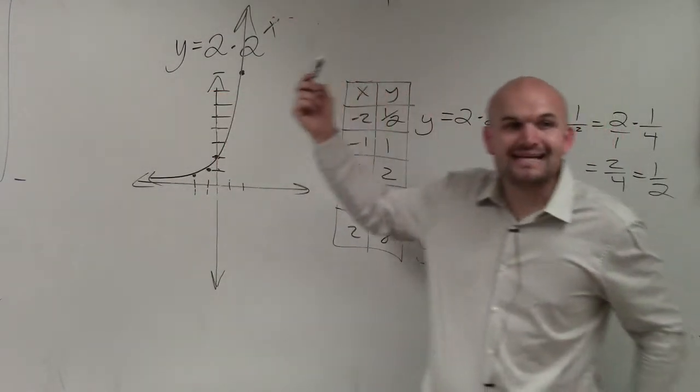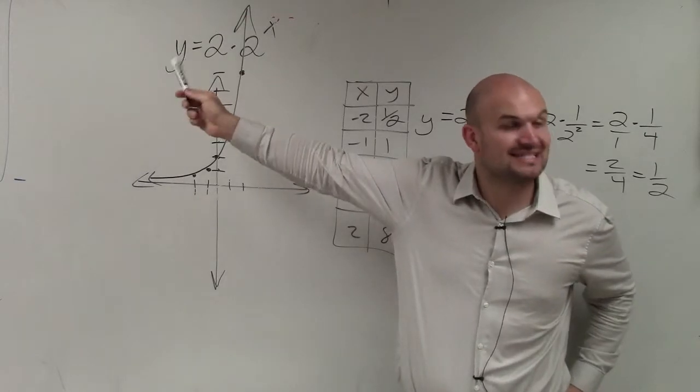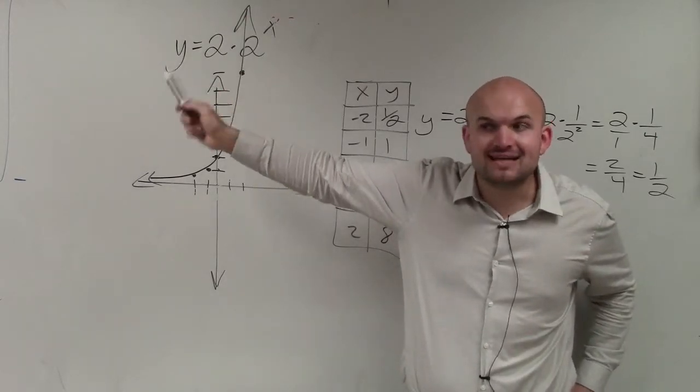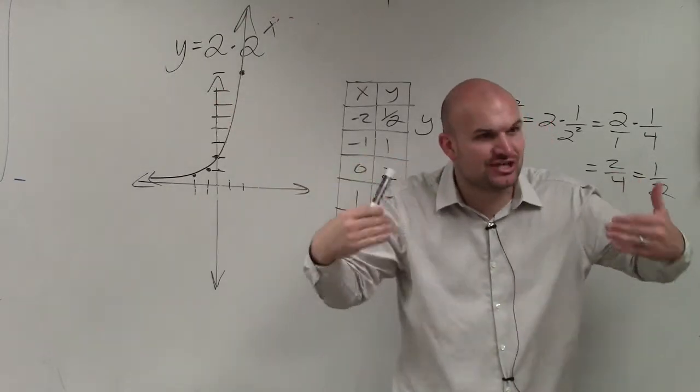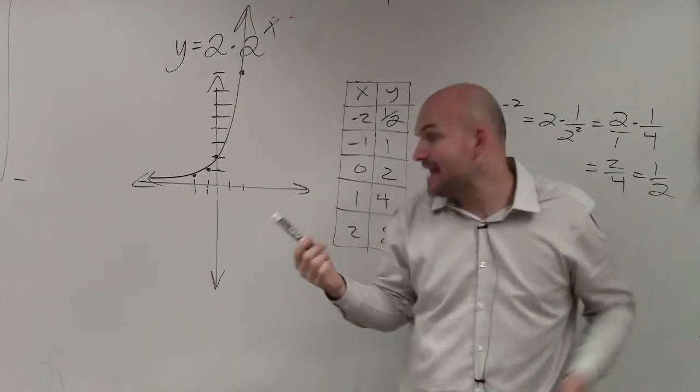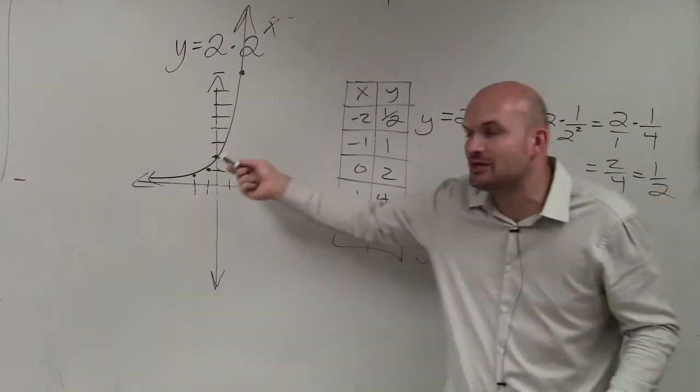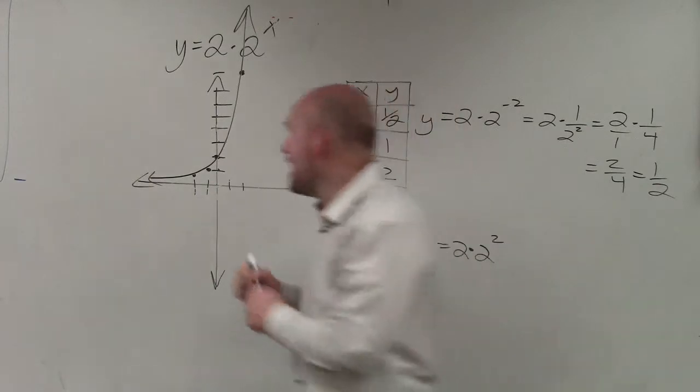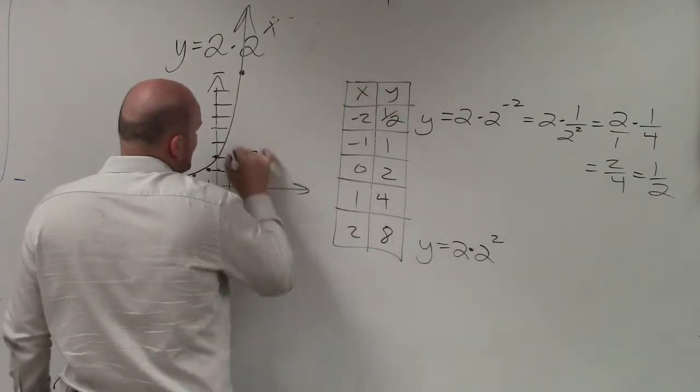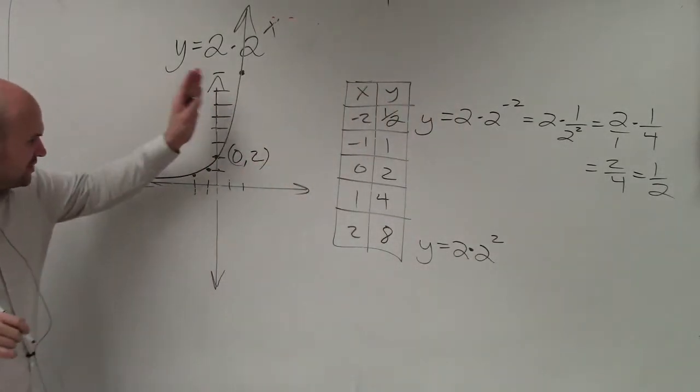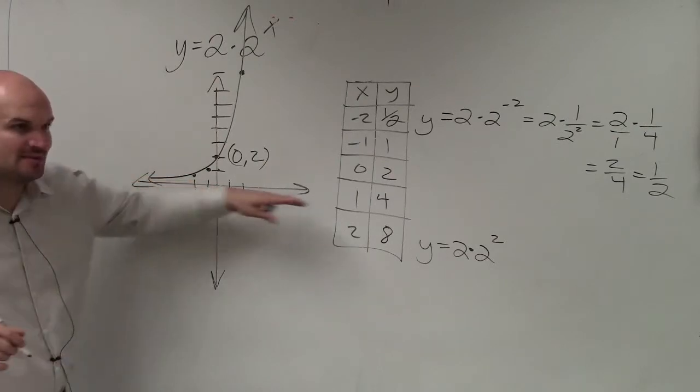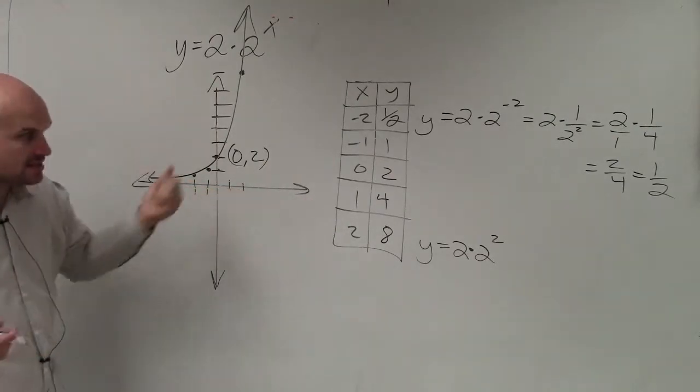So guess what? When I now have an a that's not 1, what that does is that changes what the graph looks like. Now I don't automatically have an intercept at 0 comma 1. Now I have an intercept at 0 comma 2. However, does it look like this graph still has a horizontal asymptote at 0, 0? Yes, it does.